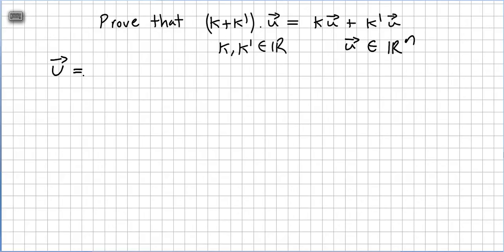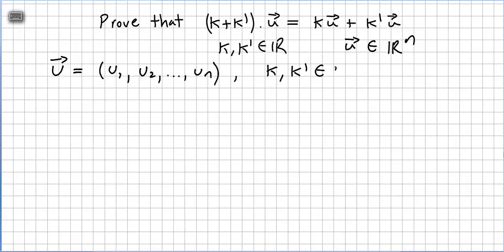So what is vector u? Vector u will have components u1, u2, ..., un. And in this case k and k' are real numbers.